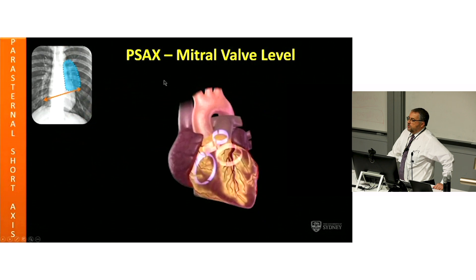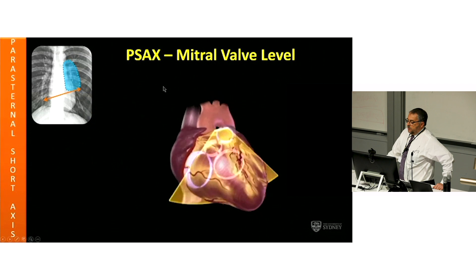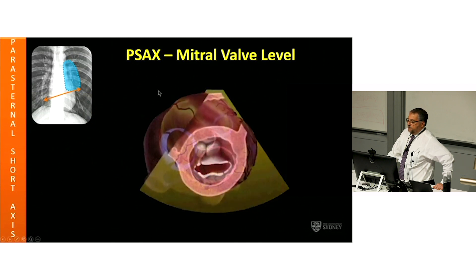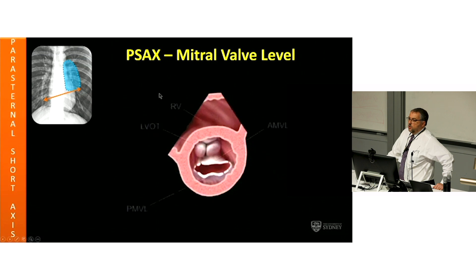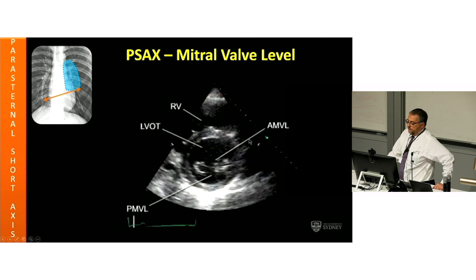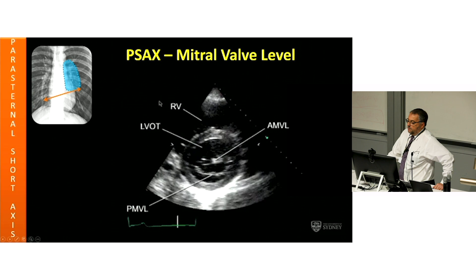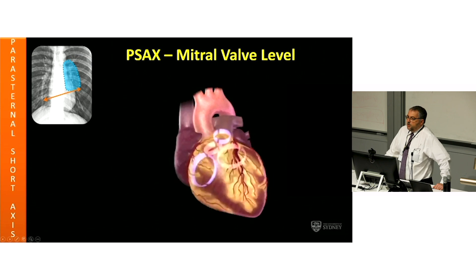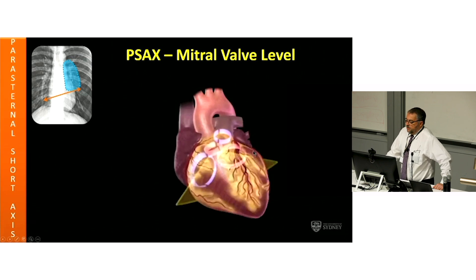When you turn the transducer square to the long axis, you get the short axis. These pictures are always taken in transthoracic echo as if you're standing at the feet, looking from the apex of the heart upward. The lateral portion of the heart — the left atrial appendage and so on — is to your right, and the medial portion of the heart with the ventricle is to your left. You know it's medial because anything that has the RV in it is by definition medial, and anything with the left atrial appendage is lateral.